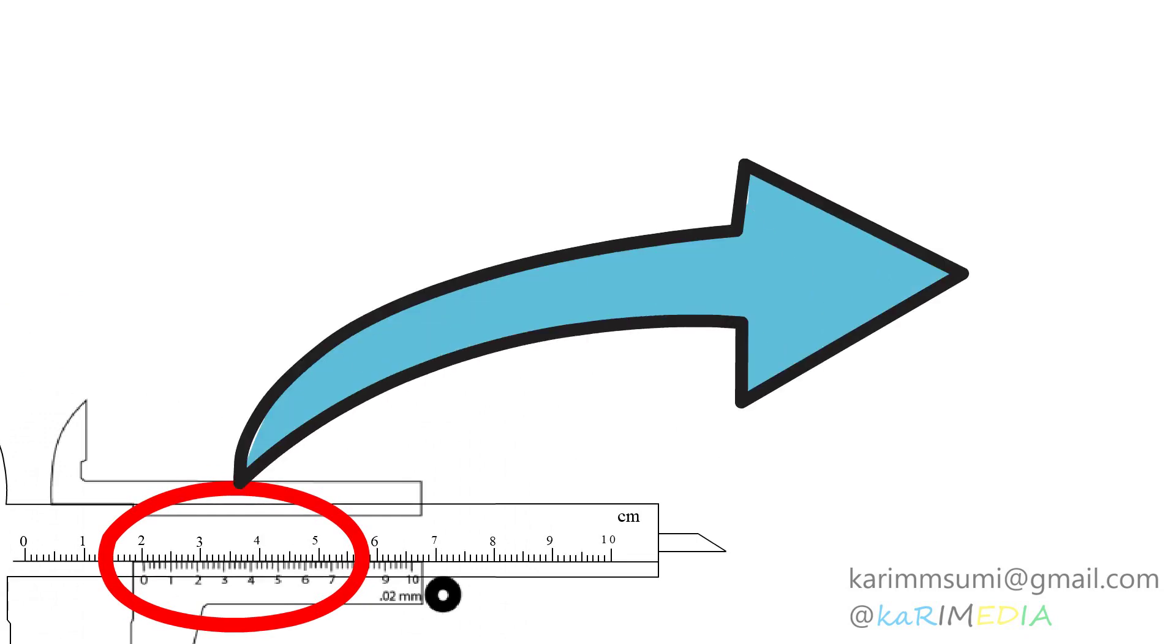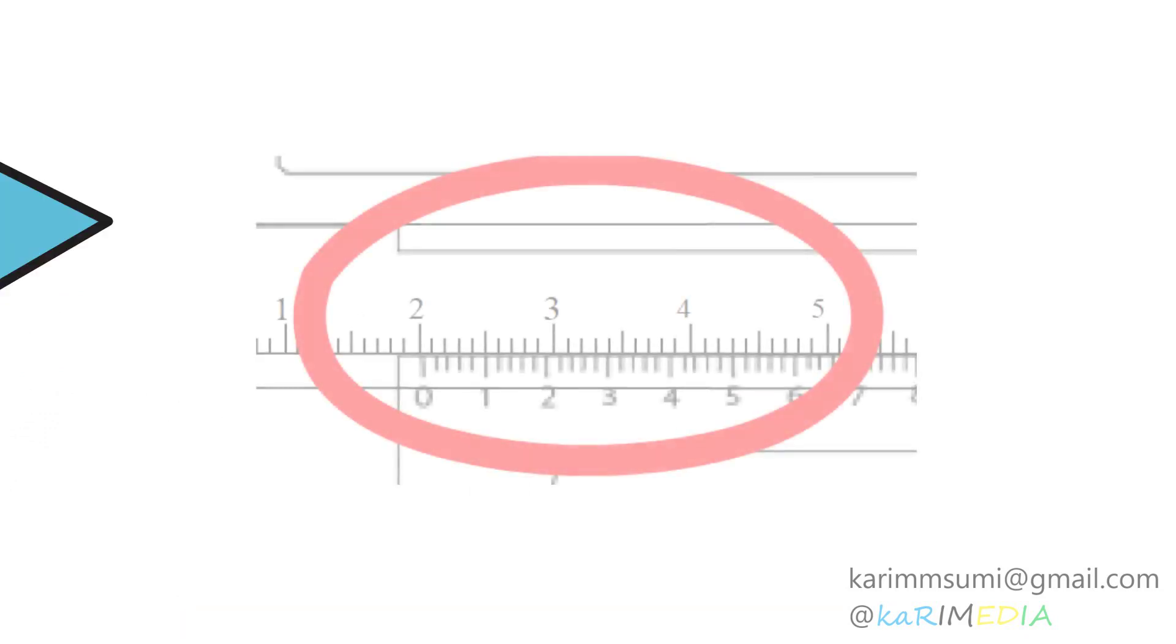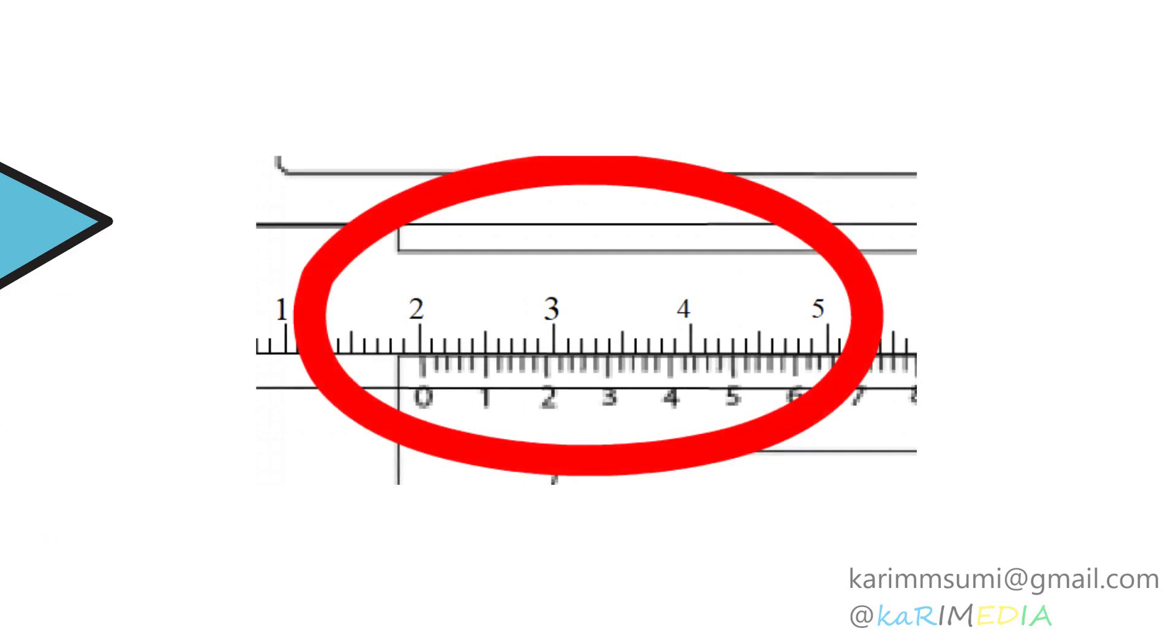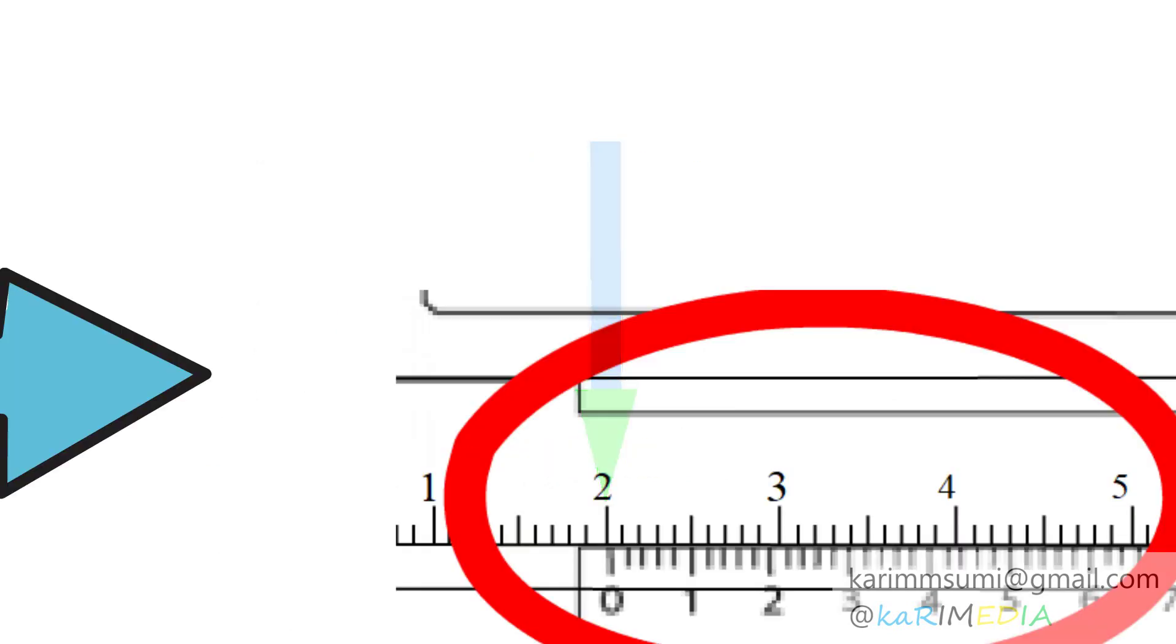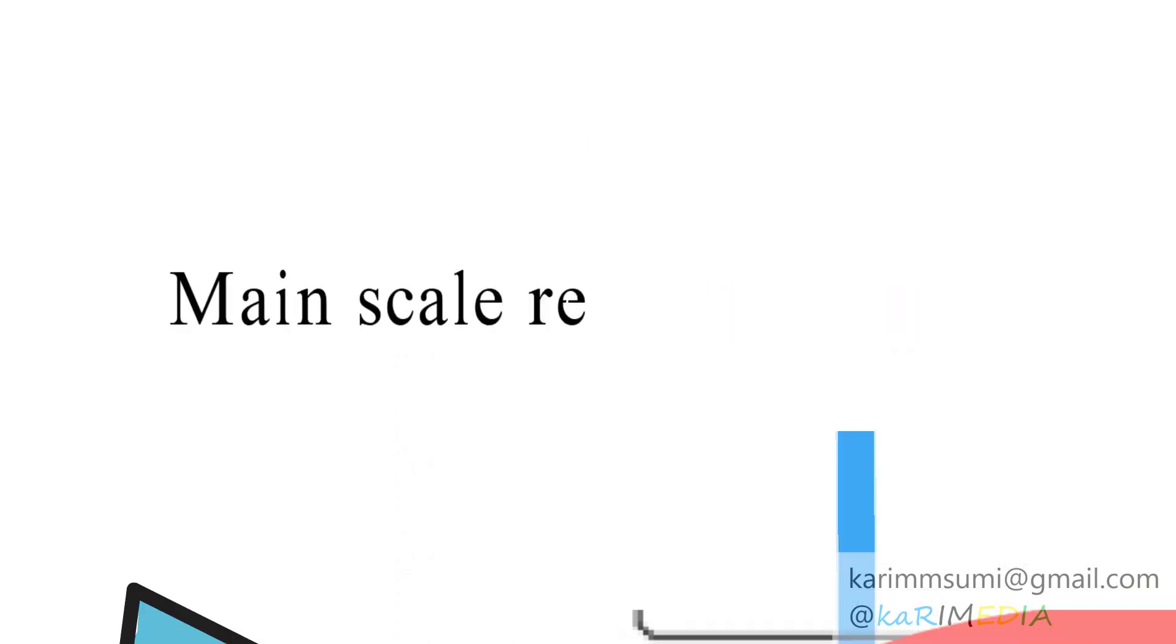Then, to get measurements of the bob, first get the main scale reading by looking at the mark line number on the main scale which is near mark line 0 of the vernier scale. From the experiment, mark line number 2 of the main scale is near 0 of the vernier scale, so the main scale reading is 2.